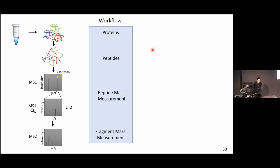The reason we have theoretical branches is that we're going to use the prior information of a database — a list of proteins that we expect to have in our sample — and this will help us identify the peptides more easily.